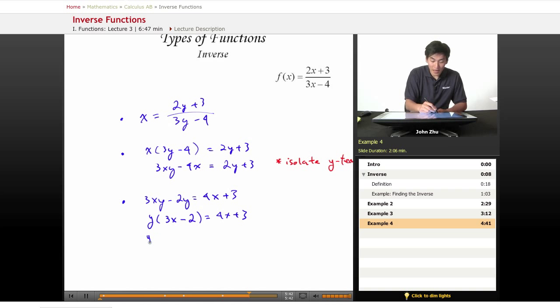And y finally equals 4x plus 3 over 3x minus 2. And finally, we want to rewrite this as f inverse of x equals 4x plus 3 over 3x minus 2.